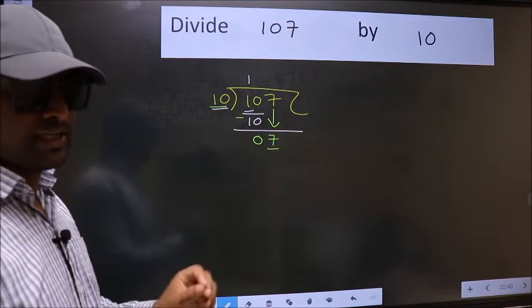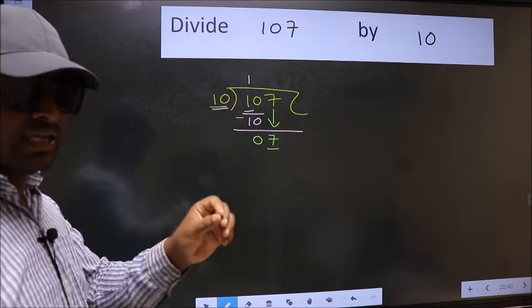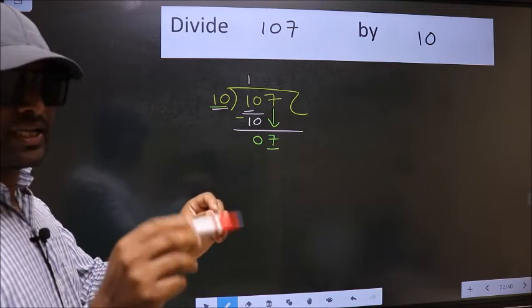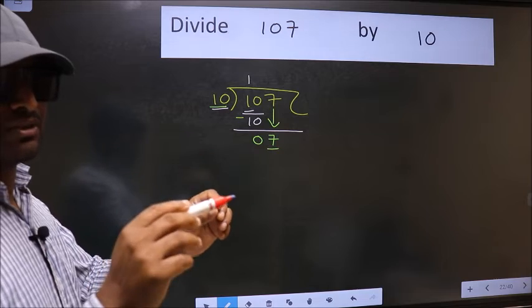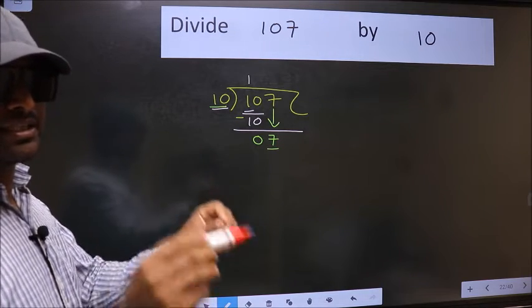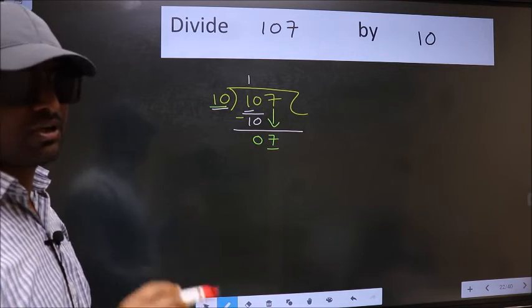I repeat: bring down the number and put dot, take 0. Bring down the number and put dot, take 0. Both at the same step, you should not do.